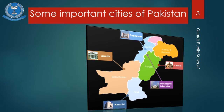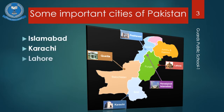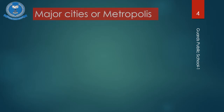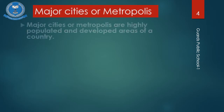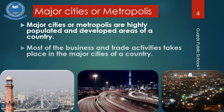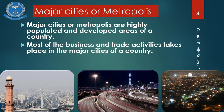Let's start. We will be studying about important cities of Pakistan: Islamabad, Karachi, Lahore, Rawalpindi, Peshawar, and Quetta. Major cities are also known as metropolis. These cities are highly populated and developed areas of a country. Most of the business and trade activities take place in the major cities of a country.